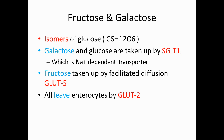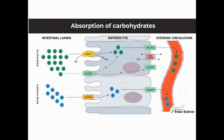All three monosaccharides leave the enterocytes via the GLUT2 transporter into the circulatory system. So remember: galactose and glucose enter cells via SGLT1, fructose enters via GLUT5, and they all leave the enterocyte into the circulatory system via GLUT2. As you can see in the picture, this summarizes the transporter system for these sugars.